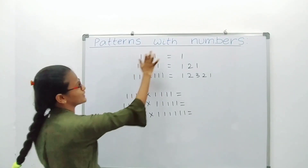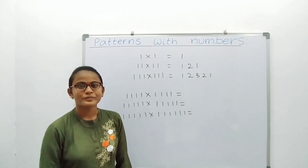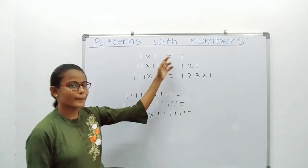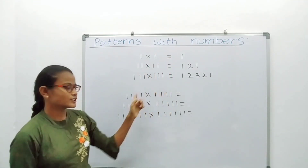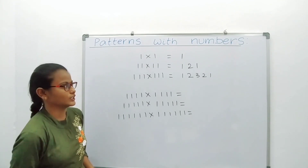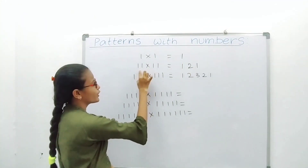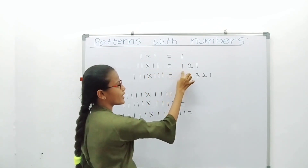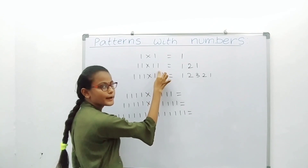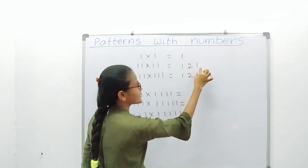Now, patterns with numbers. In this video, I am explaining about multiplication patterns. If you observe this given pattern carefully, next you will solve these problems easily without doing multiplication. Here, 1 into 1 equals 1. 11 into 11 equals 121 — you have to increase up to 2 and decrease to 1.